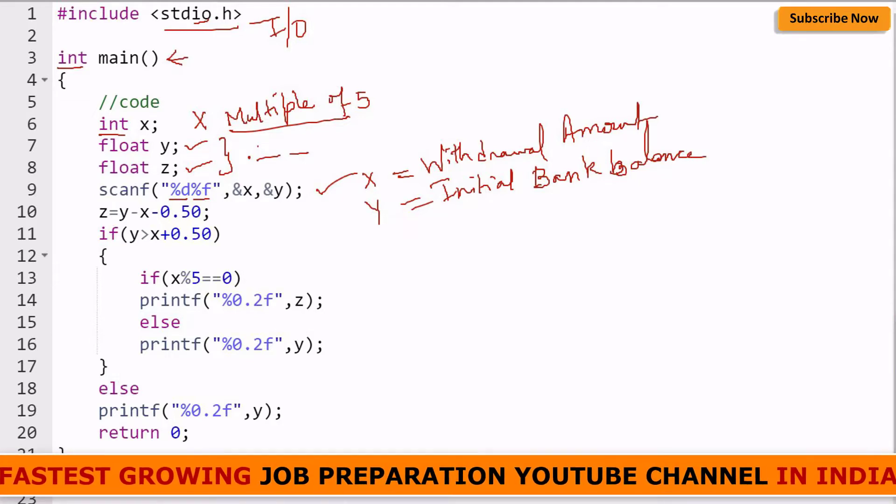For integer I have written %d and for float I have written %f. You should keep in mind that y is a float data type variable, so you should write %f. I have written ampersand x and ampersand y to take the input. After this, I have calculated: we subtract the withdrawal amount from the initial bank balance, and this 50 cents which was the bank charge. The bank will charge 50 cents for each transaction.